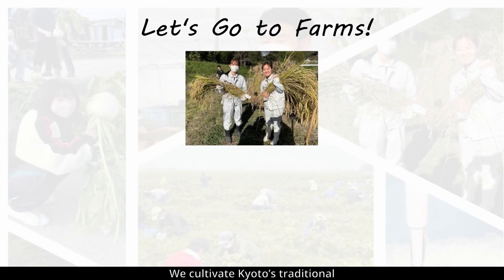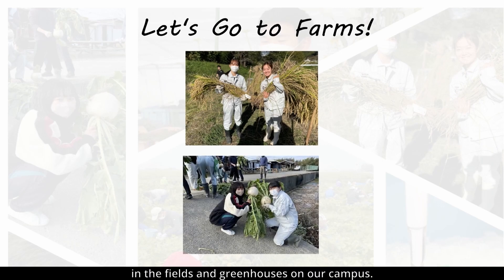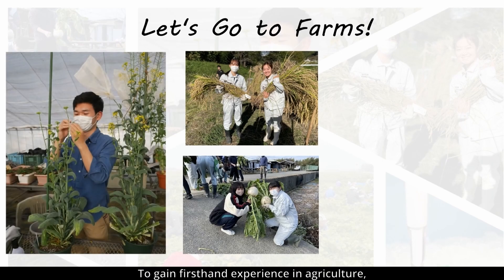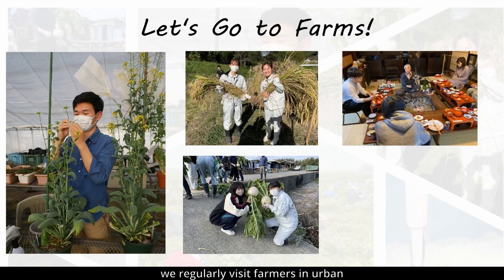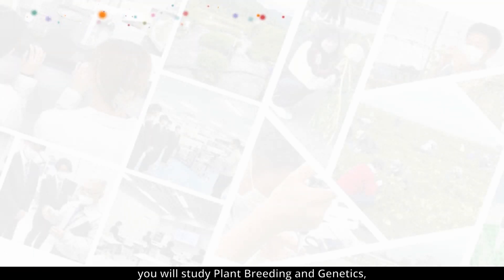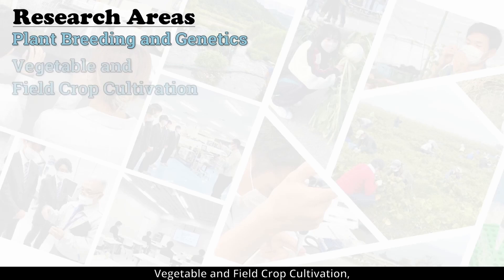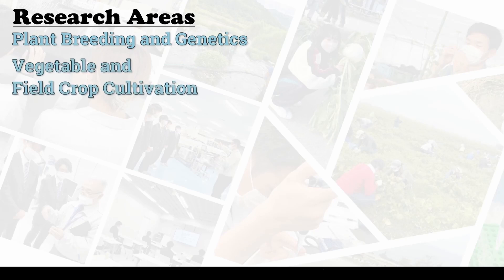We cultivate Kyoto's traditional and innovative vegetables and crops in the fields and greenhouses on our campus. To gain first-hand experience in agriculture, we regularly visit farmers in urban and rural areas for sampling and surveys. In this field, you will study plant breeding and genetics, vegetable and field crop cultivation, and farm management.